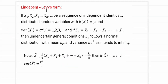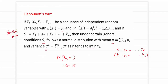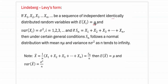The second form is called the Lindberg-Levy form. Here, x1, x2 up to xn are a sequence of independent and identically distributed random variables. Because they are identically distributed, E[xi] equals mu for all variables — each one has the same mean mu, which is the key difference from the Lyapunov form. The mean of Sn is n times mu, the variance of Sn is n times sigma squared, and this holds as n tends to infinity.